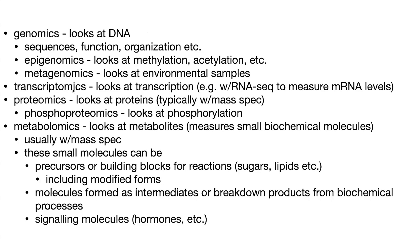Now, transcriptomics — we're talking about transcription, making messenger RNA copies from genes. This is often done with RNA sequencing to measure messenger RNA levels. If you wanted to look at just a single thing, you could do QPCR or something like that, but to get all of the messenger RNAs in the cells you're studying, you use transcriptomics with a high-throughput method like RNA-seq that tells you about all the different RNAs.